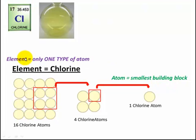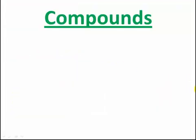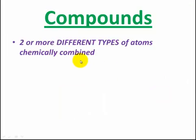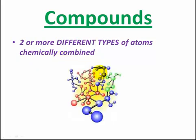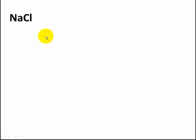An element is made up of only one type of atom. Compounds are made of two or more different types of atoms - they must be chemically combined. This is important: they have reacted together to form a new substance. Here I've got different atoms together that are chemically combined, indicated by the bonds between these particles.